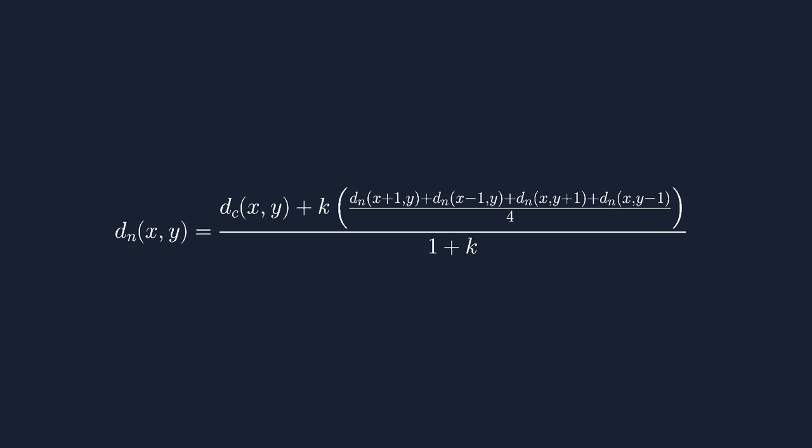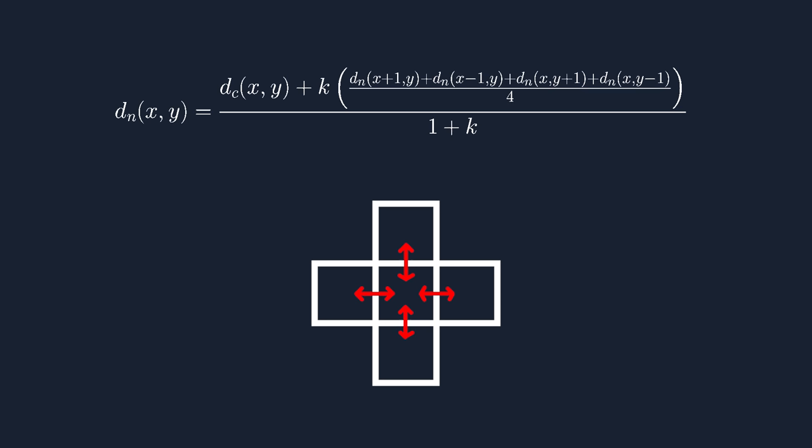However, going back to our density equation, we can see that it already does satisfy this condition since each of the coefficients is 1 over 4, and 4 of them added up multiplied by k will never be larger than the denominator of 1 plus k. So that's how we diffuse attributes in the fluid. We simply repeatedly solve an equation for each square, and their densities will converge to the diffuse densities that they are supposed to have.